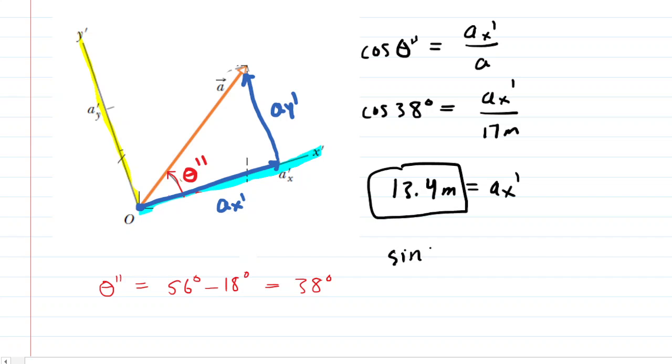Now we'll just do this with the sine function. So the sine of 38 degrees equals the side that is opposite, which is A sub Y prime, over A, which was 17 meters. Multiply both sides by 17 meters, and 17 times the sine of 38 is about 10.5 meters. And this is the correct answer to part D of the question.